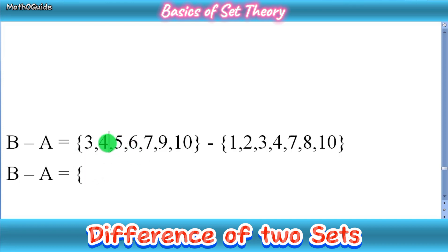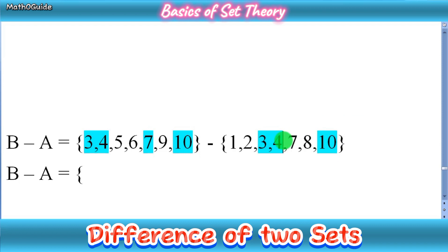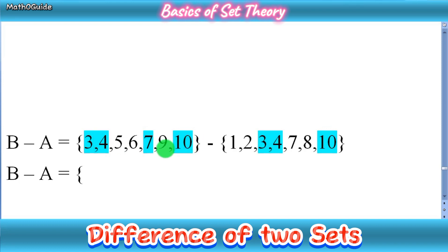The common elements are 3, 4, 7, and 10 — I'm coloring them. A very important point: we remove the common elements from only the first set. Many students mistakenly remove elements from the second set, but that is wrong. We focus only on the first set. So 3, 4, 7, and 10 are removed from B, and the remaining elements are 5, 6, and 9. Therefore, B minus A equals {5, 6, 9}.